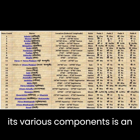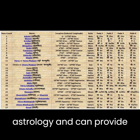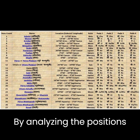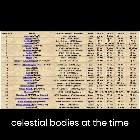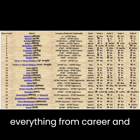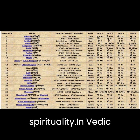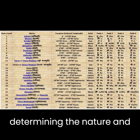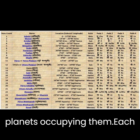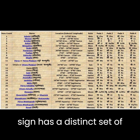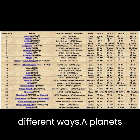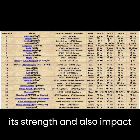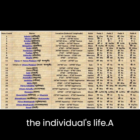Understanding the zodiac and its various components is an important part of Vedic astrology and can provide valuable insight into a person's life and potential. By analyzing the positions of the planets and other celestial bodies at the time of a person's birth, astrologers can provide guidance on everything from career and relationships to health and spirituality. In Vedic astrology, the zodiac signs play a crucial role in determining the nature and characteristics of the planets occupying them. Each sign has a distinct set of qualities and traits that influence the planets in different ways, and a planet's placement in a particular sign can enhance or diminish its strength and impact the overall effect on the individual's life.